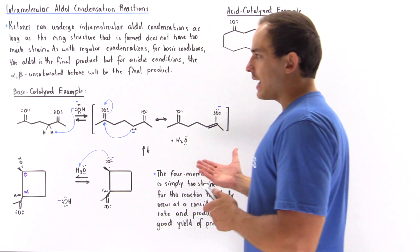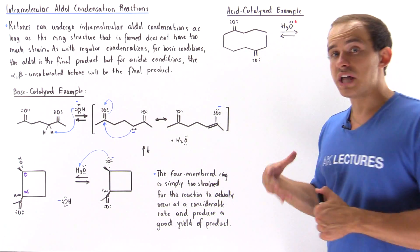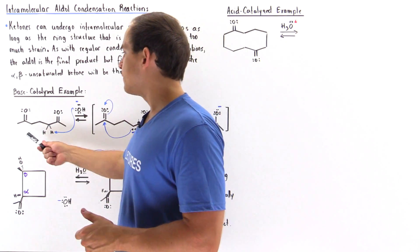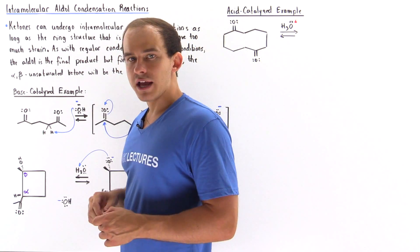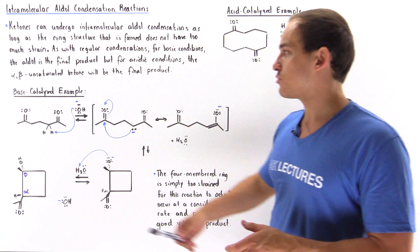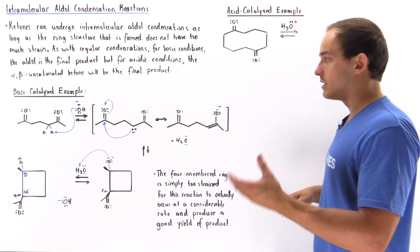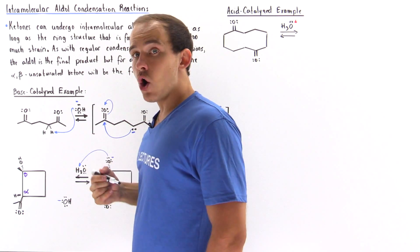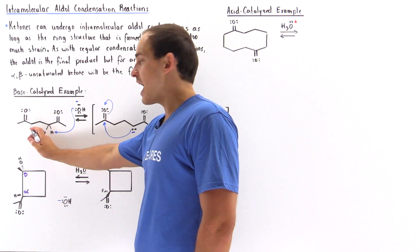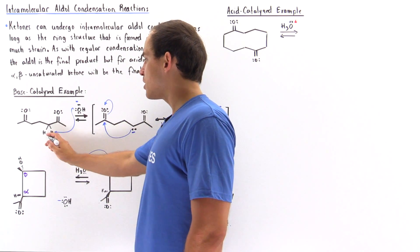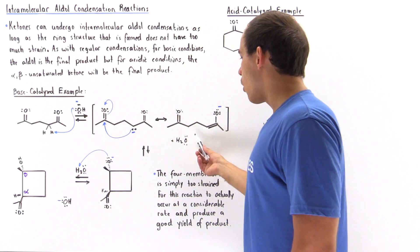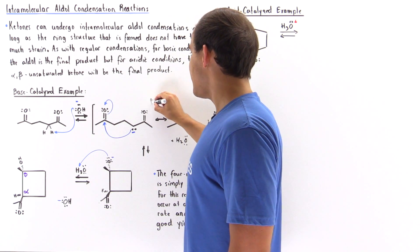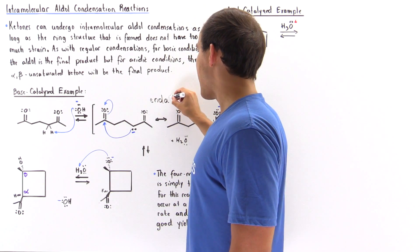Let's begin by first looking at a base-catalyzed example that will not take place. Suppose we have a ketone added into a basic solution where hydroxide acts as our catalytic base. The hydroxide can take off either alpha H atom. Because we have symmetry, let's say one H is taken off, forming water and our enolate. The enolate basically acts as our nucleophile.